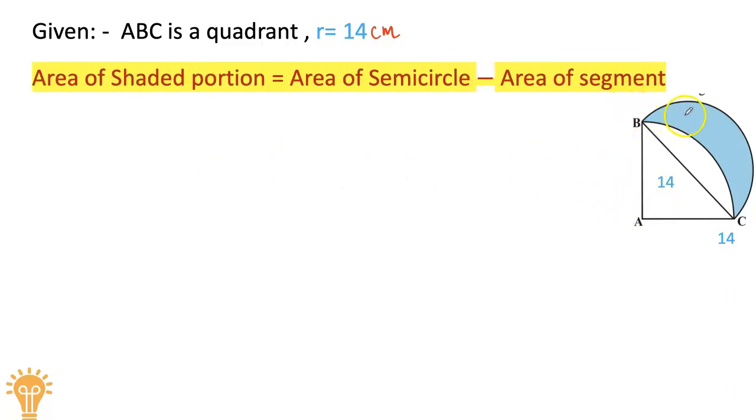How to get the area of the shaded portion? Area of shaded portion equals area of semicircle minus area of the segment. We will subtract the area of the segment from the area of the semicircle.